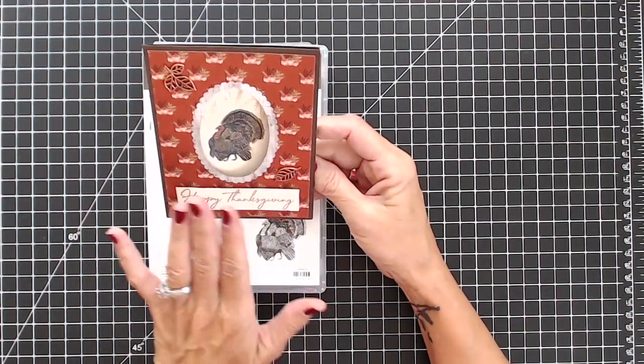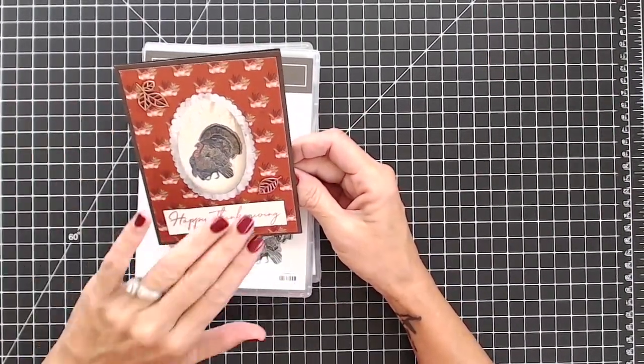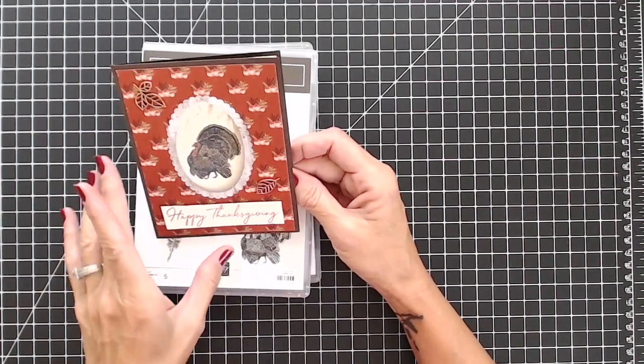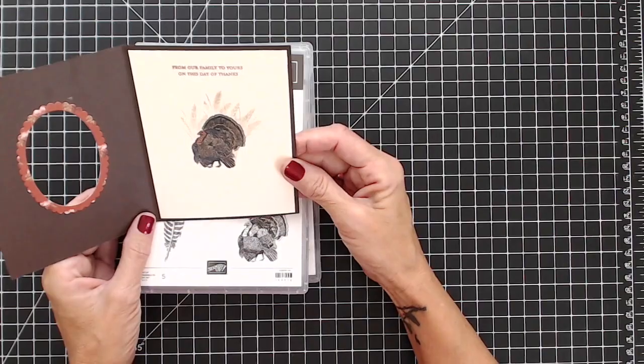And what I envisioned when I created the card was I wanted it to look like this was wallpaper in the house and this was your kitchen window, and you're peeking out your kitchen window and you see a turkey. How fun.